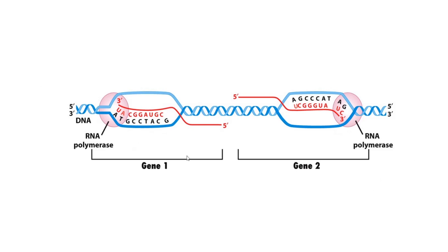Here I'm just going to show you a situation where we have two genes that are actively being transcribed. So you have RNA polymerase and we're making an mRNA molecule. mRNA is always created or extended from the 5' end to the 3' end, so you have RNTPs being added to the 3' end to extend the mRNA.